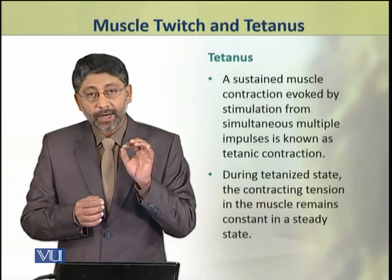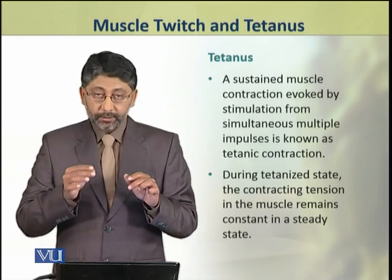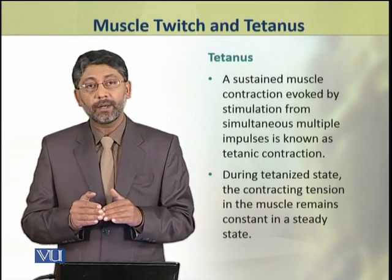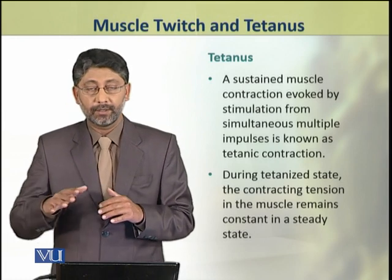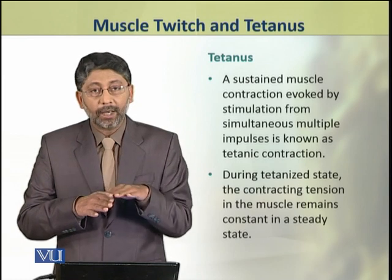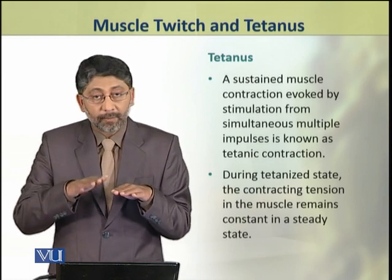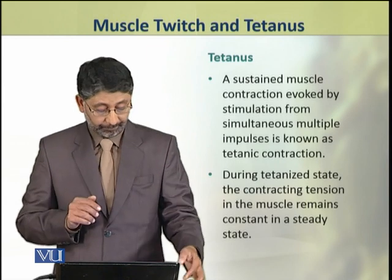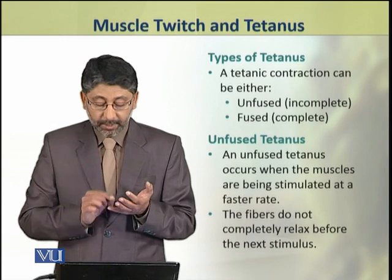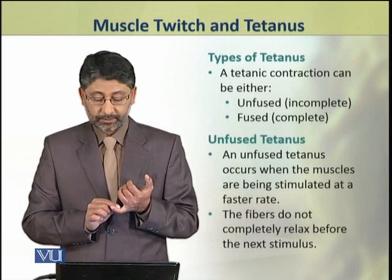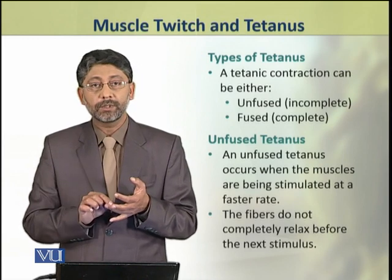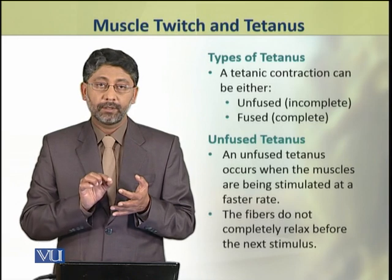During the tetanized state, the contracting tension in the muscle remains constant in a steady state — the muscle cell continuously remains in a contracting state and does not completely relax. There are two types of tetanic contractions: unfused, that is incomplete tetanus, and fused, that is complete tetanus.